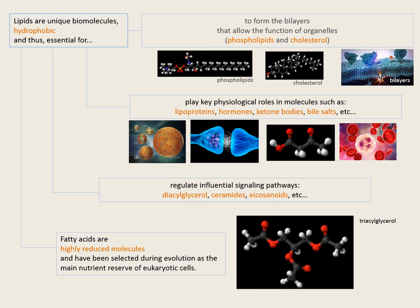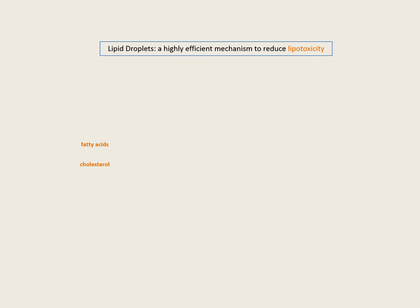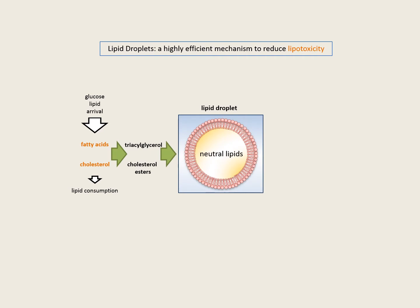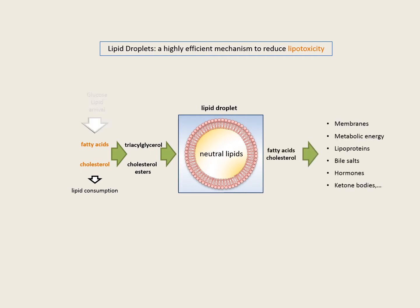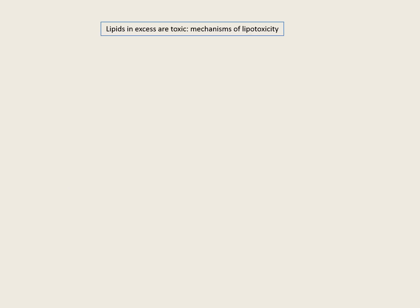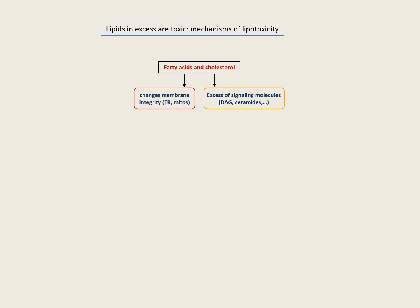But although having many important biological functions, they can also be highly toxic compounds. In all eukaryotic cells, when the lipid arrival is higher than the lipid consumption, to avoid lipotoxicity, fatty acids and cholesterols are esterified and stored within newly formed lipid droplets. When the external arrival of lipids is reduced, lipid droplets gradually supply the required lipids to generate membranes, produce metabolic energy, or synthesize lipoproteins and hormones. This process occurs basically to avoid lipotoxicity, as an excess of lipids can potentially be harmful by changing membrane fluidity or generating excess signaling molecules such as diacylglycerol or ceramides.